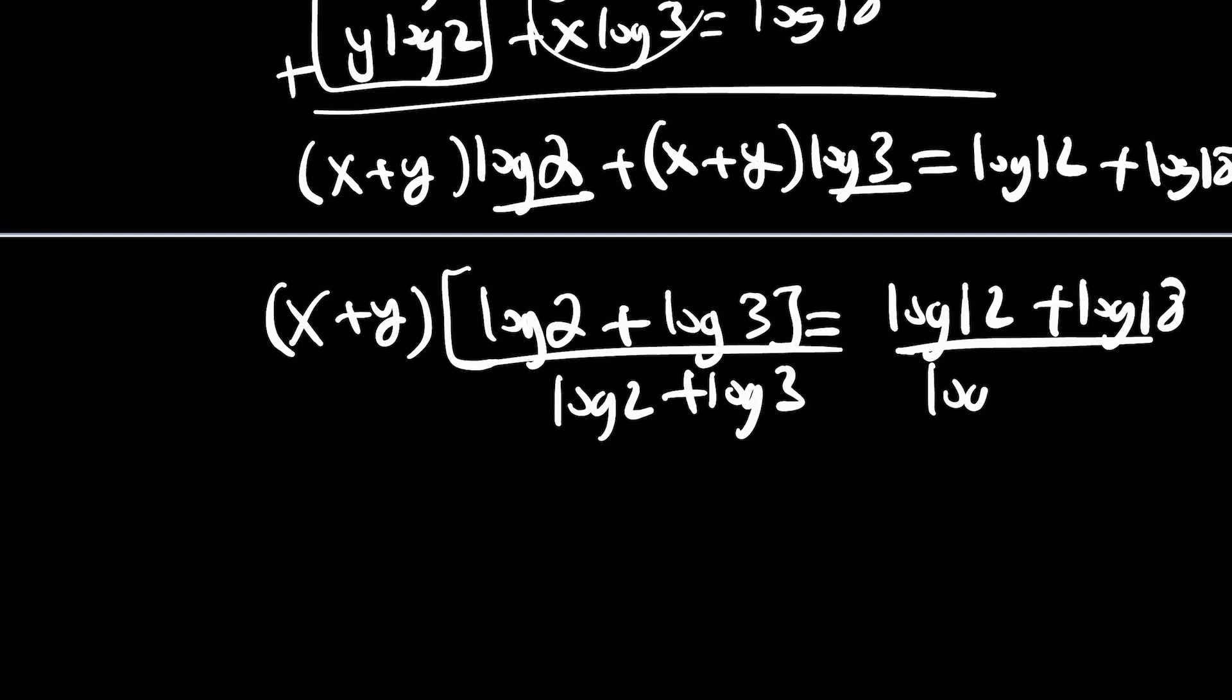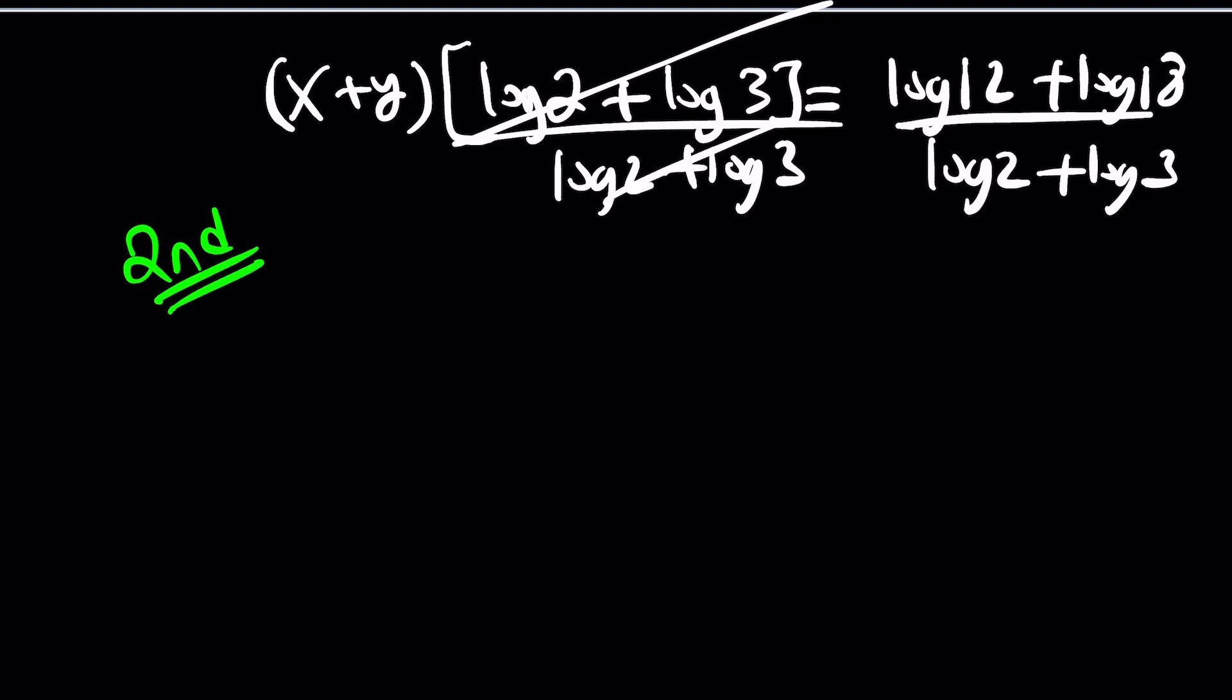So we can take out x plus y, and then this can be log 2 plus log 3, which can be turned into log 2 times 3 or log 6. And then finally, we can divide both sides by log 2 plus log 3 to find x plus y. Now, is this helpful or any better? I'm not sure. But I just wanted to show you, yes, this is one way to pursue. But I have another approach that I like to talk about, and that is called the second method.